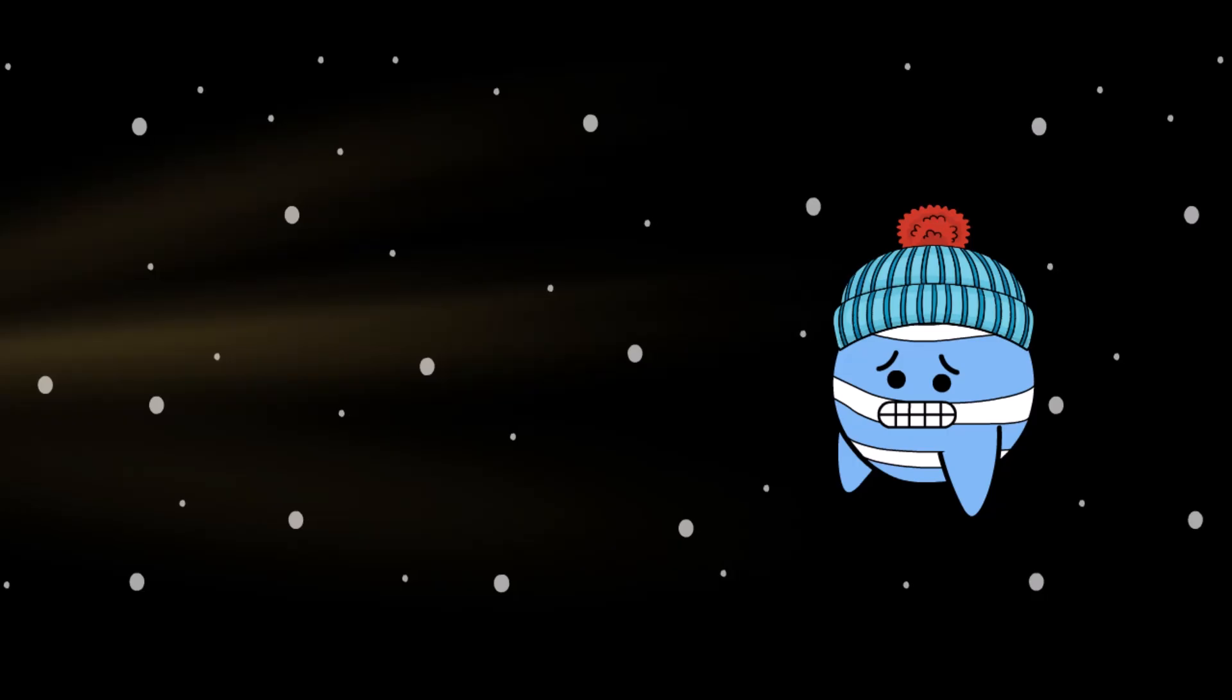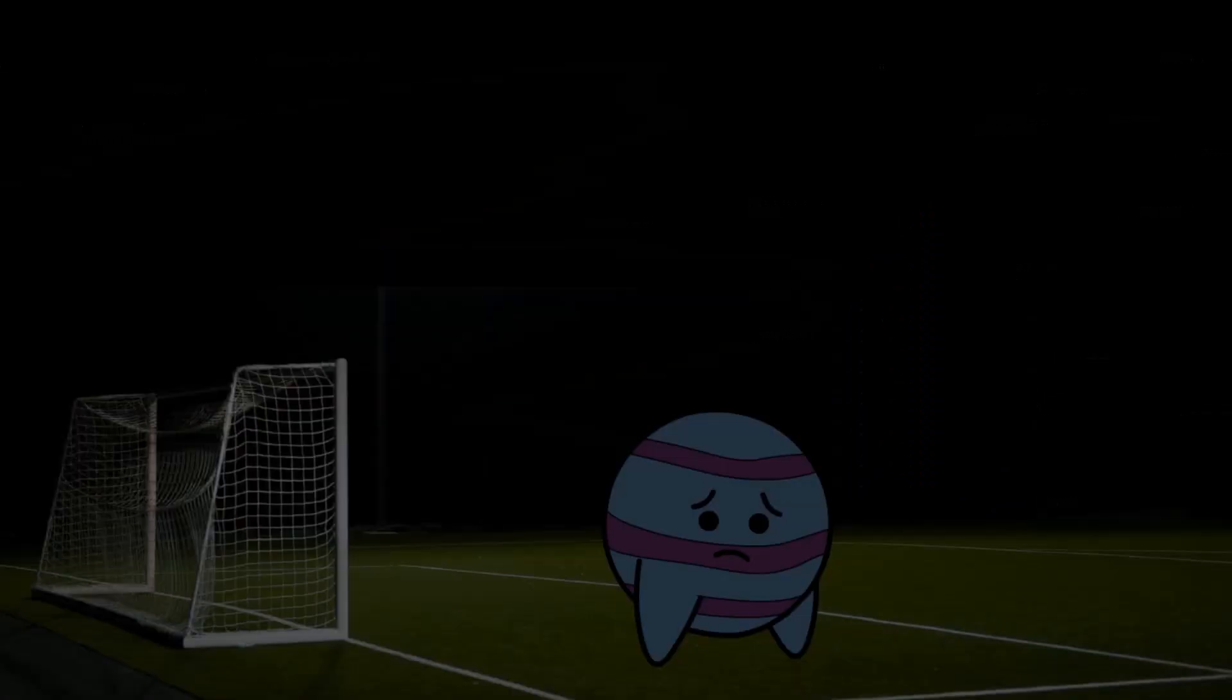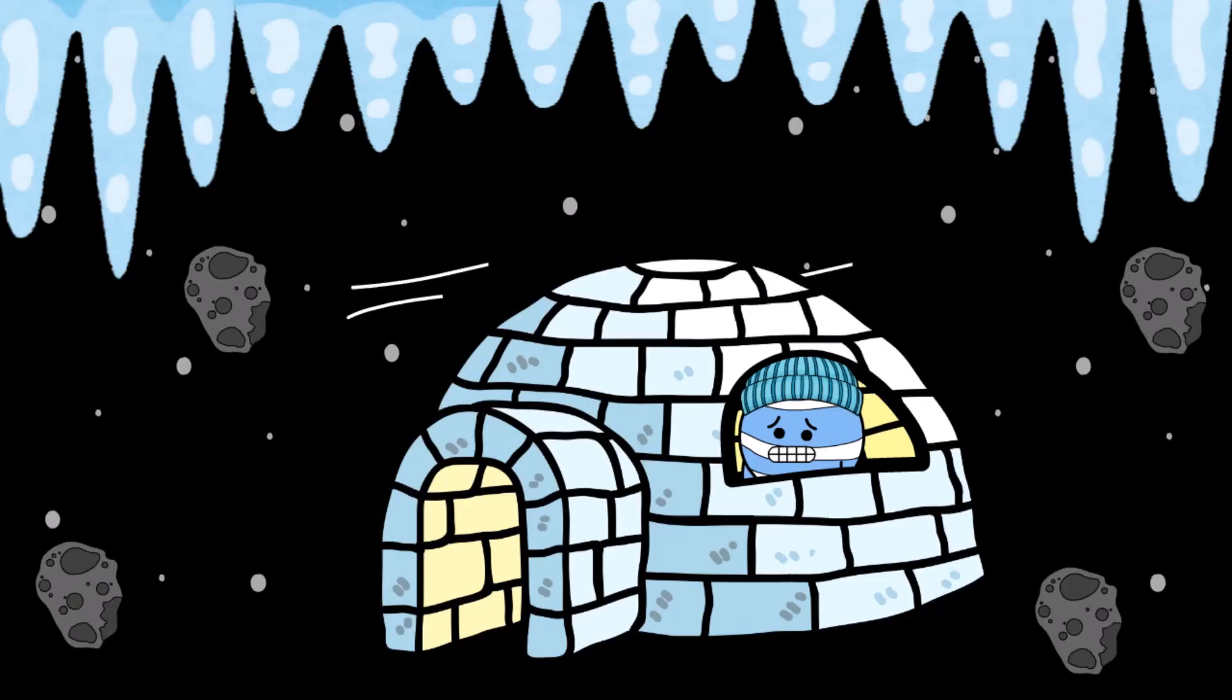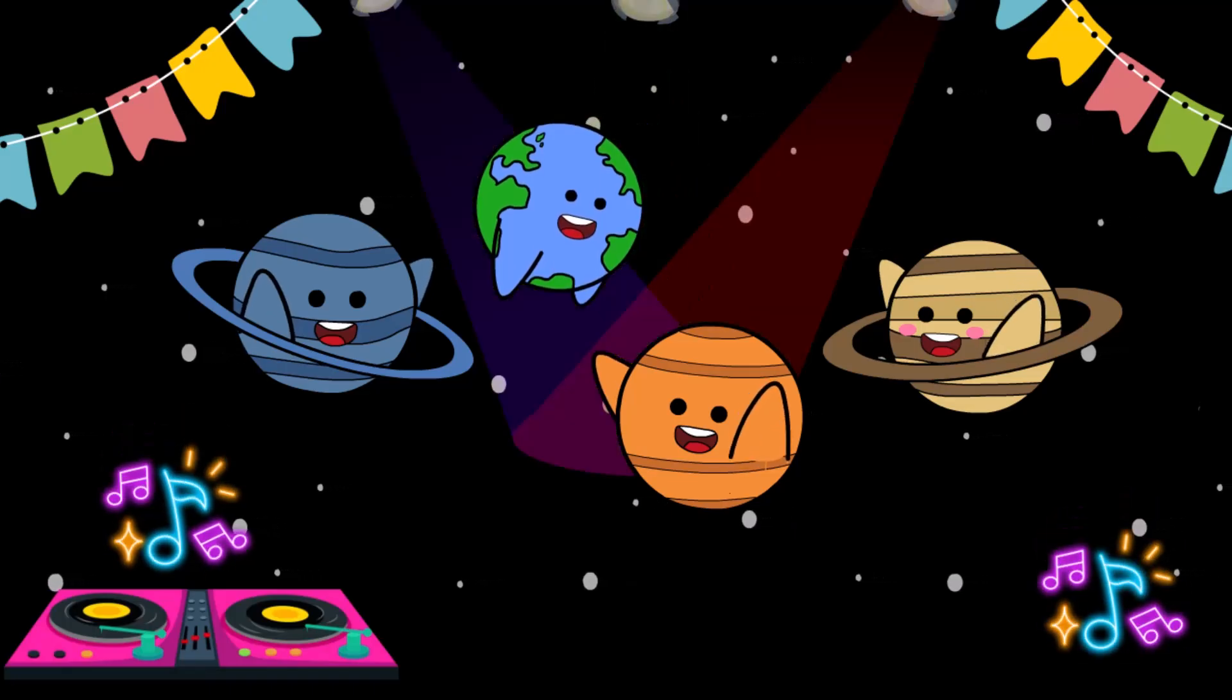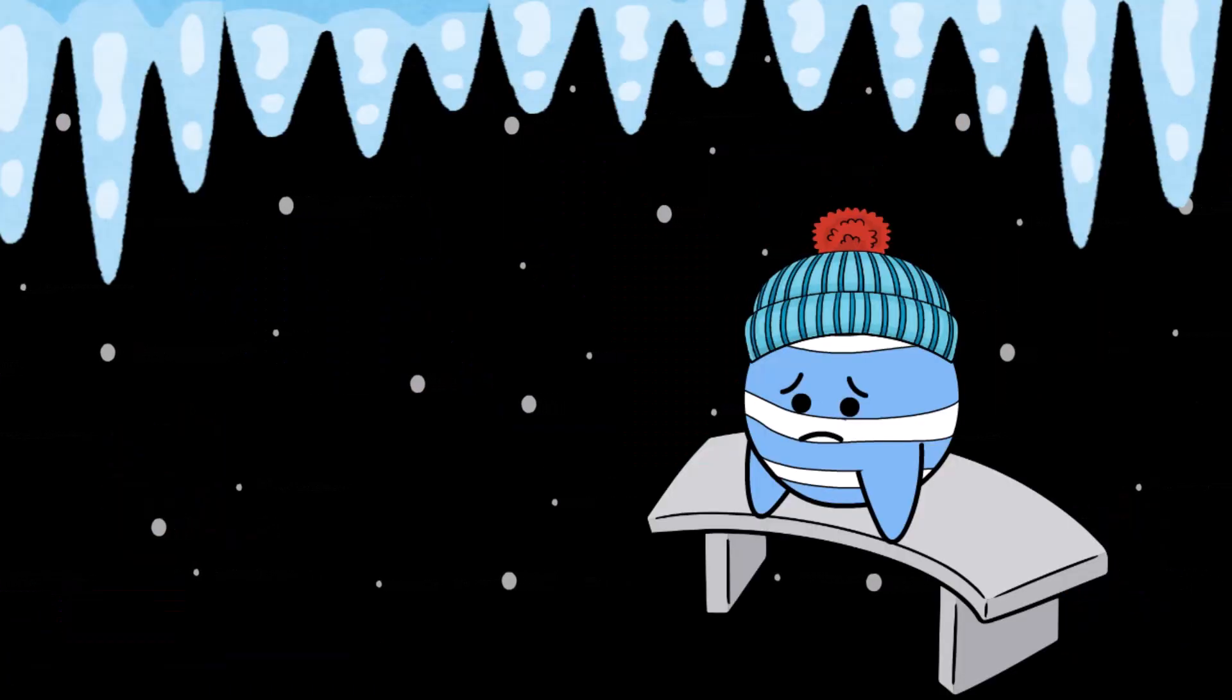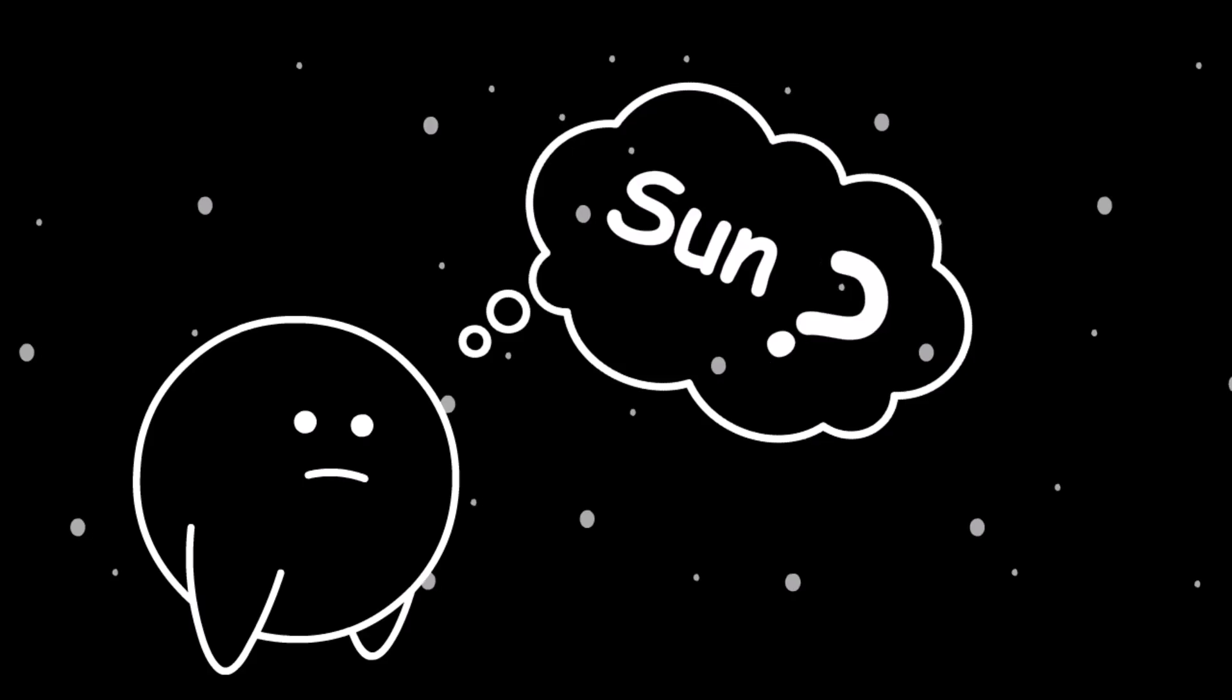By the time it gets there, it's so weak and stretched out, it's like getting a flashlight beam from across an entire football field. Neptune is stuck in the solar system's suburbs, way past the inner circle where all the fun happens. It's cold, dark, and lonely.